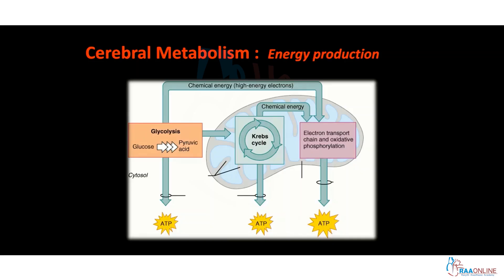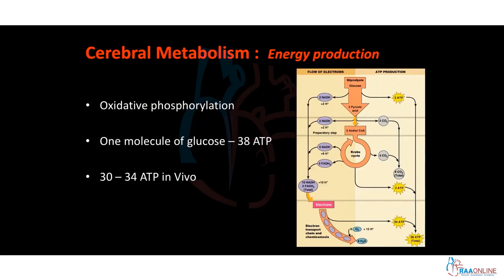The major source of energy production in neurons is through glycolysis, where glucose is converted to pyruvic acid in the cytoplasm. It is then transported into the mitochondria, where it is metabolized through the Krebs cycle, and ultimately ATPs are generated from the electron transport chain process. This process is called oxidative phosphorylation. One molecule of glucose can theoretically produce 30 molecules of ATP; however, because of the simultaneous activity of various metabolic pathways, around 30 to 34 ATPs are generated.